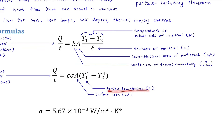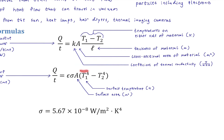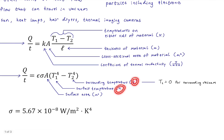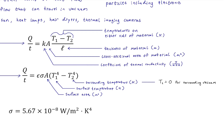T2 is the surrounding temperature, also in Kelvin. Here it matters: using Celsius will give the wrong answer because the temperature is raised to the fourth power, so the actual number matters. The surrounding temperature is defined as zero if the environment is a vacuum.